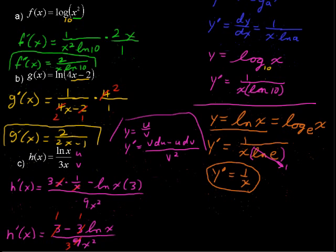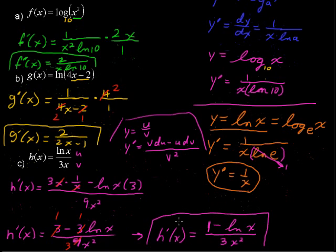And we are left with h prime of x equals 1 minus the natural log of x over 3x squared. So, that is the derivative of the original h of x function.